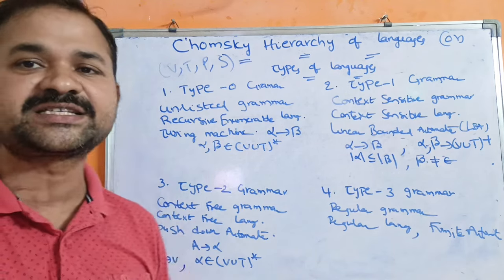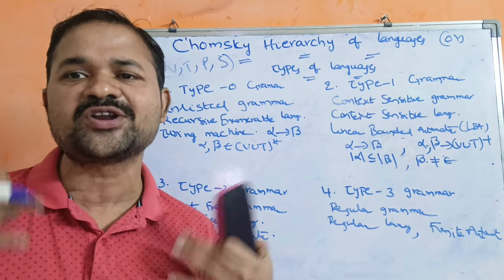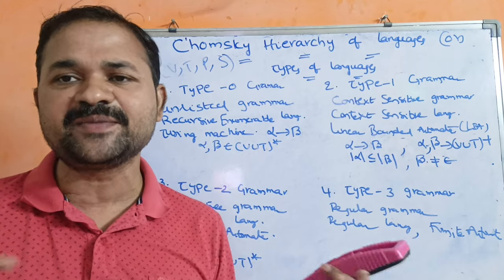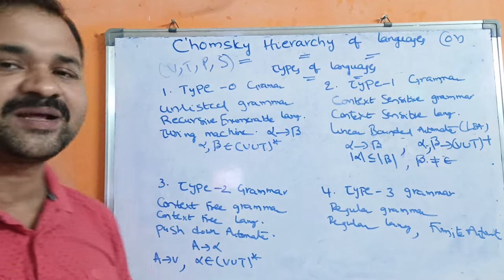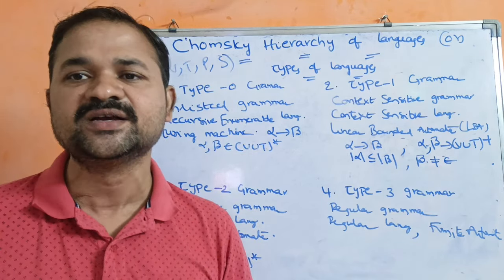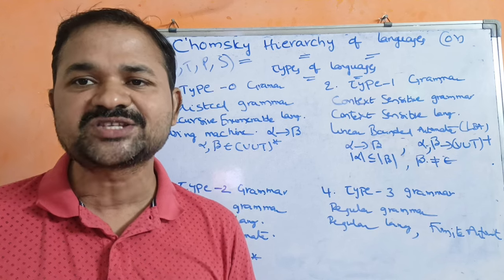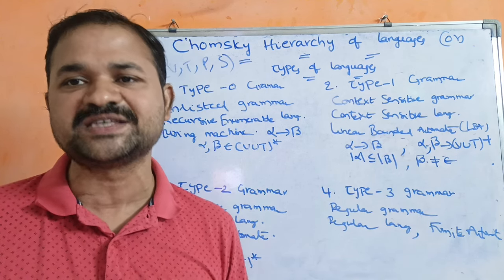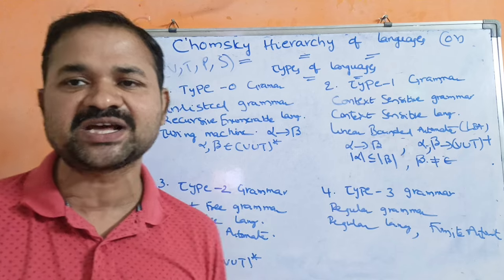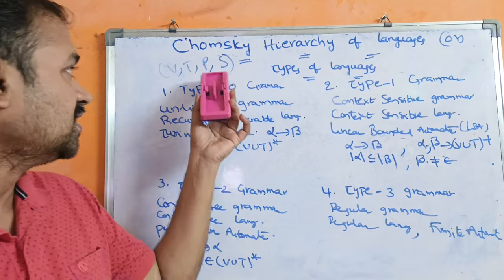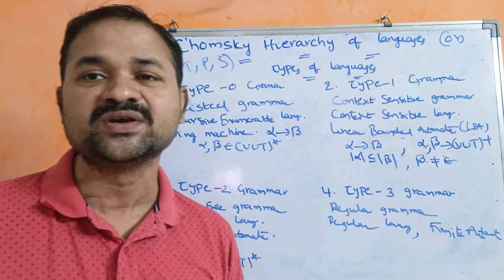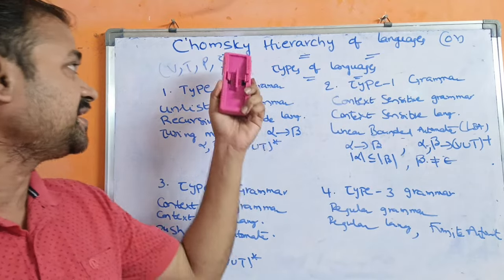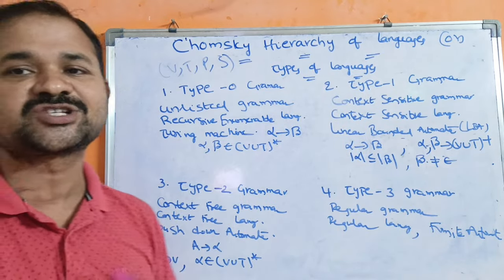Where V represents a set of variables or non-terminals, and the variables are represented by uppercase letters. T represents a set of terminal symbols, and terminals are represented by lowercase letters, or we can use digits or symbols such as plus, minus, star, and likewise. P means set of production rules, and S represents the start symbol.